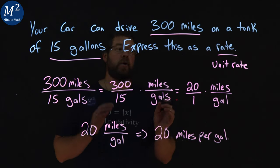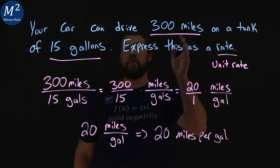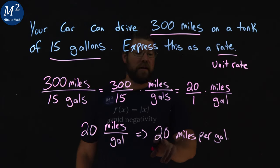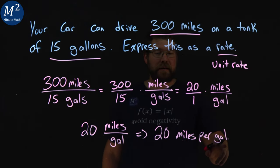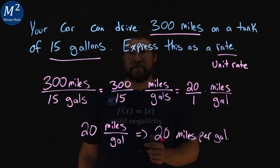And so, that would be our unit rate, our rate here from our example. So, 300 miles on 15 gallons is 20 miles per gallon. I hope you learned some math here, and as always, thanks for watching.